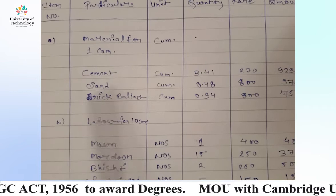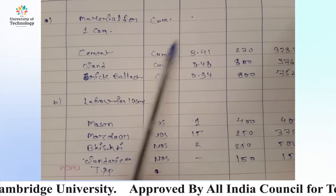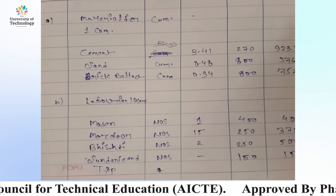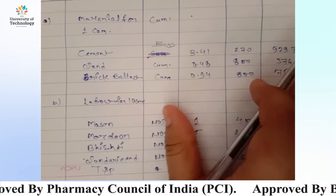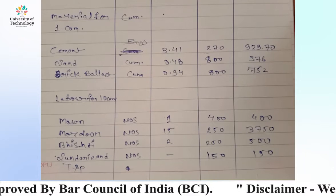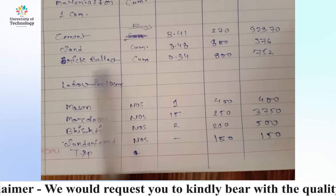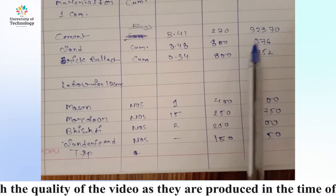First, let's do material. Then under materials you have: cement, sand, and brick. For cement, the unit is bags — 3.41 bags into rate per bag gives the amount. For sand, 0.48 cubic meters into rate. You can assume rates or use market values.